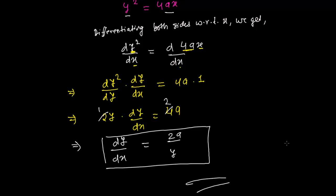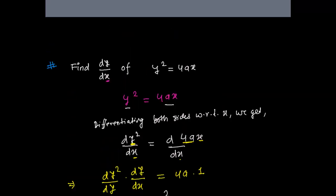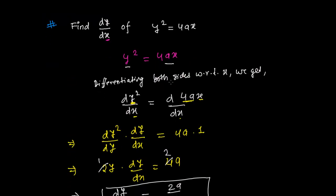Now we find out our dy over dx, or you can say the derivative of y with respect to x, 2a over y. So it is 2a over y. So we will meet you in the next video. Goodbye.